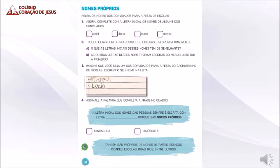Nomes próprios. Releia os nomes dos convidados para a festa de Nícolas. Vamos voltar lá para a página 56 para ler os nomes dos convidados. Vamos lá? Mariana, Miguel, Alcione, Rafael, Roberta, Maria Clara, Eduardo, Gabriel, Juliana, Matheus, Lúcia.